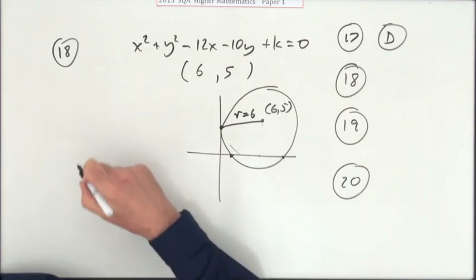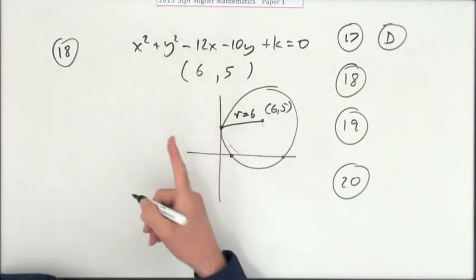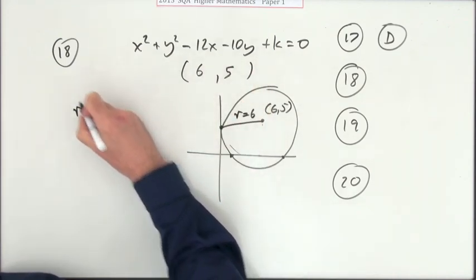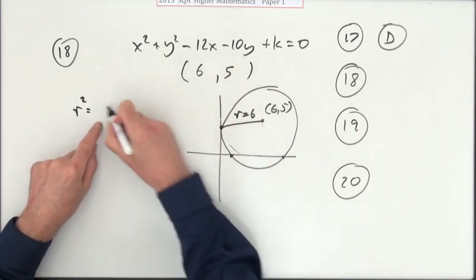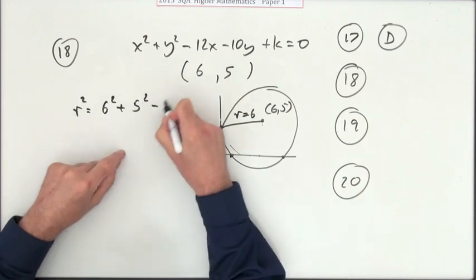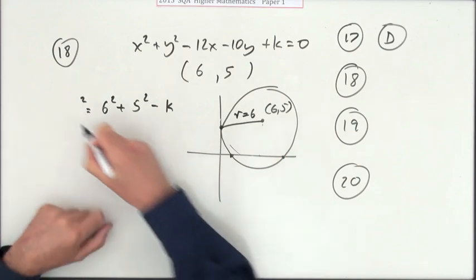But now you've got to figure out what k is to make it that. It's quite long compared to all the rest of the questions so far. Well, how do you work out the radius? The radius formula is the square root—or I could just square that and leave out the square root sign—it's the centers squared, so six squared and five squared, take away the number at the end. You know the radius is six, so six squared equals that.